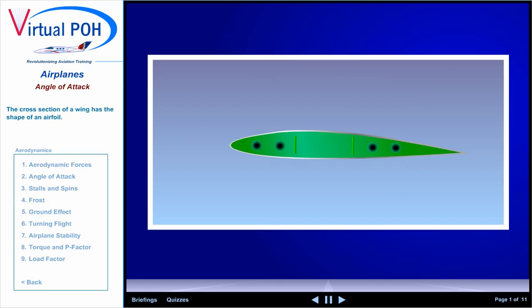The cross section of a wing has the shape of an airfoil. The rounded forward section is called the leading edge. The pointed aft section is called the trailing edge. The curvature of the airfoil is called camber.